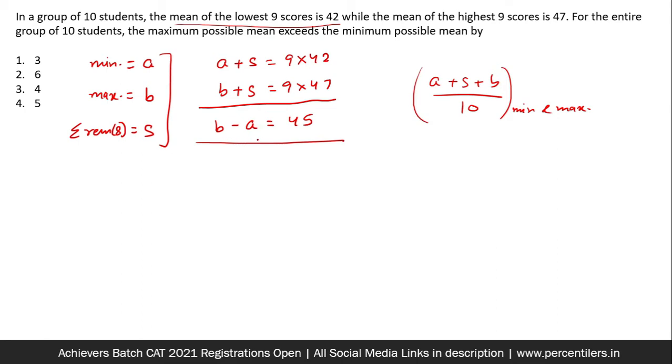Now you know that since the average of the lowest 9 scores is 42, the lowest score cannot be greater than 42. In the best possible case, this lowest score would be 42. That is the maximum possible case. And in that case, as you know, it is implied that B would be 87.